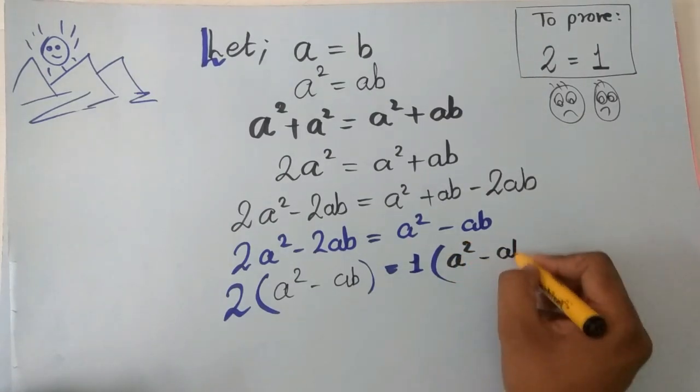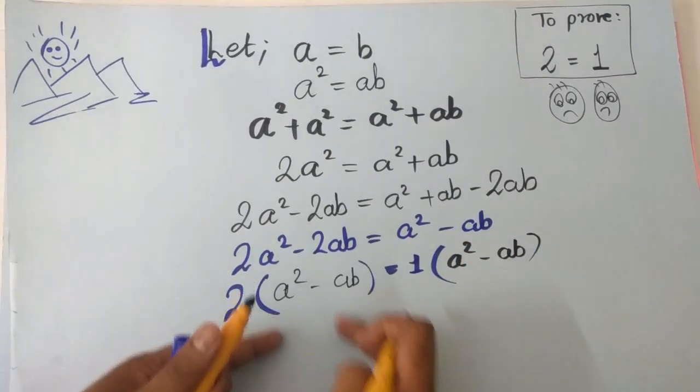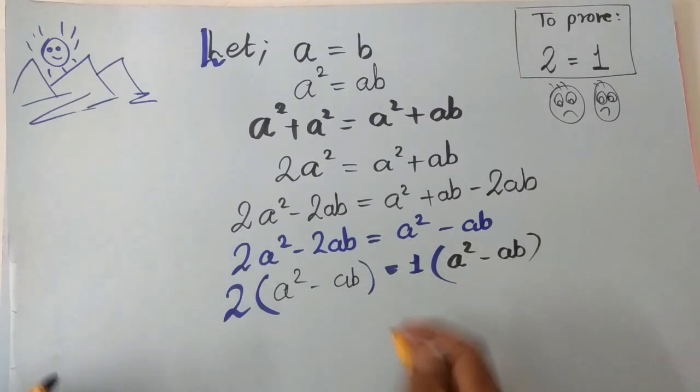a square minus ab, shift a square minus ab to another side, both are getting cancelled.